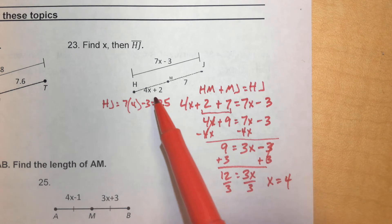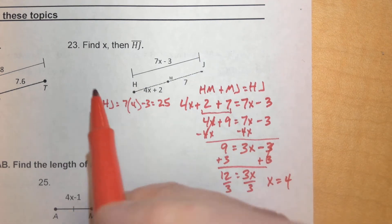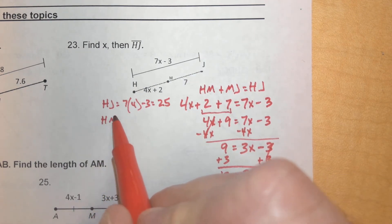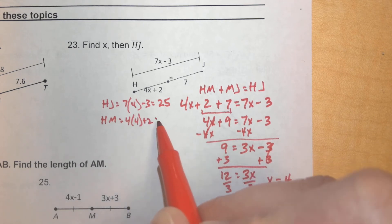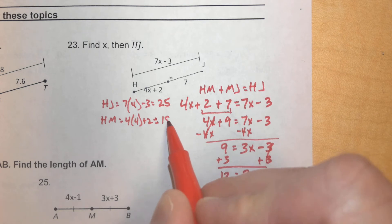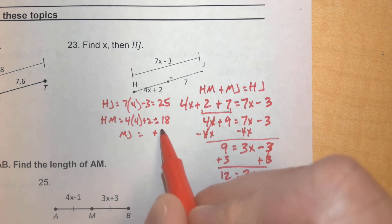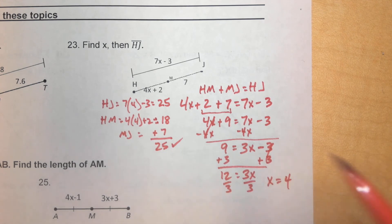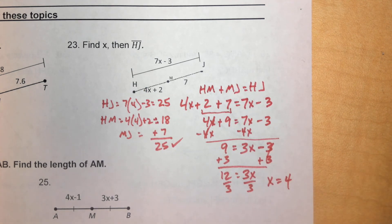Now, just to double check, let's plug X in here to H to M too. Because remember, when we add these two together, it should equal the 25. And so, when we find out what H to M is, that would be 4 times 4 plus 2. 4 times 4 is 16, plus 2 is 18. And if we were to add that 7 from M to J, then that would equal 25. So, we did everything correctly. We solved for X. We found the distance from H to J. That is segment addition.